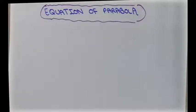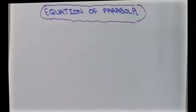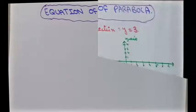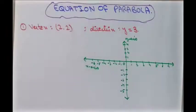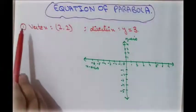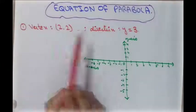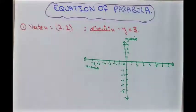Here we will learn about how to find the equation of a parabola when we are given a vertex point and a directrix line. Let's start the lecture and take some examples. In our first example, the vertex point is given and a directrix line is also given.